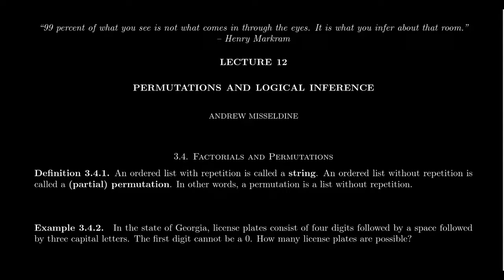We say an ordered list with repetition is called a string. This is borrowed from computer programming, for which a string is an ordered list of characters of some kind, and we do allow repetition in that situation. If we don't allow for repetition, our list we refer to as a permutation.